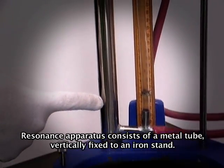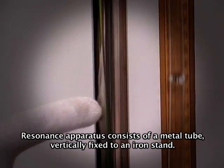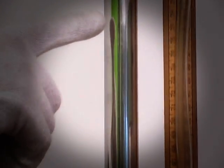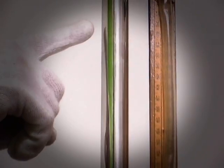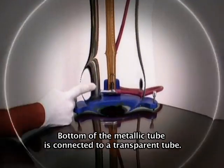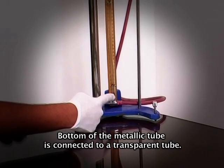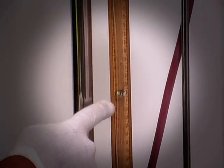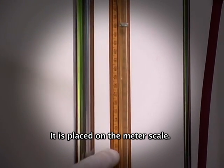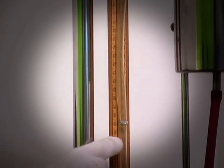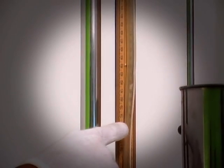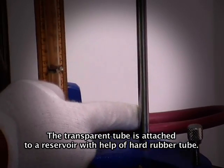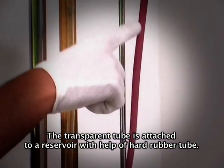Resonance apparatus consists of a metal tube vertically fixed to an iron stand. Bottom of the metallic tube is connected to a transparent tube. It is placed on the meter scale. The transparent tube is attached to a reservoir with the help of rubber tube.